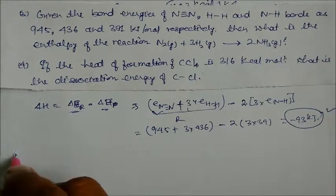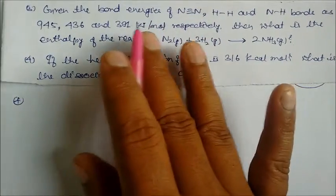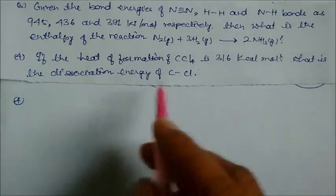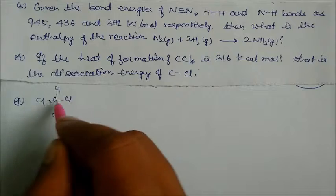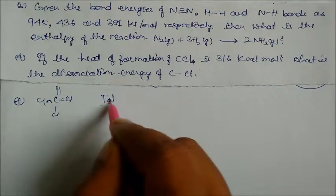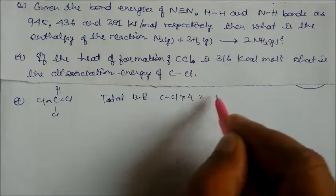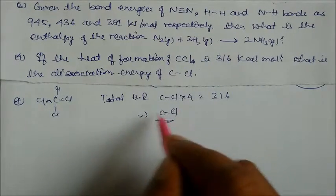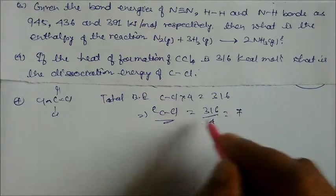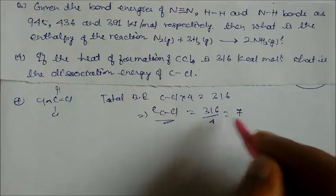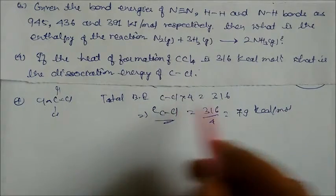Question 4: if the heat of formation of CCl₄ is 360 kilocalorie, what is the C-Cl bond energy? The total bond energy of CCl₄ is 316. Since CCl₄ has 4 C-Cl bonds, E(C-Cl) = 316 divided by 4 = 79 kilocalorie per mole. This is the bond energy of the C-Cl bond.